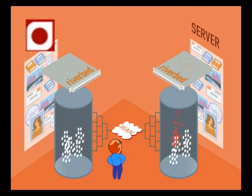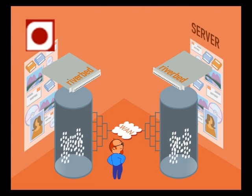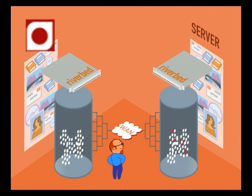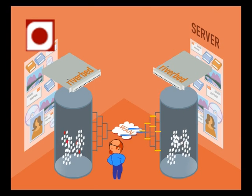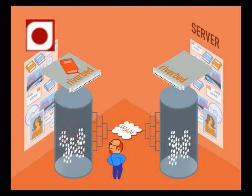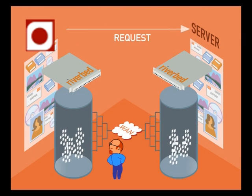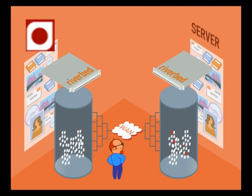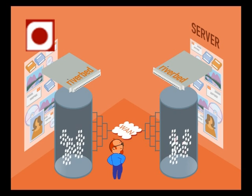What does Riverbed do? Riverbed optimizes the protocols used over the network so that data can be transmitted faster. It allows you to make much better use of the available link, effectively multiplying the usable bandwidth of your connection.